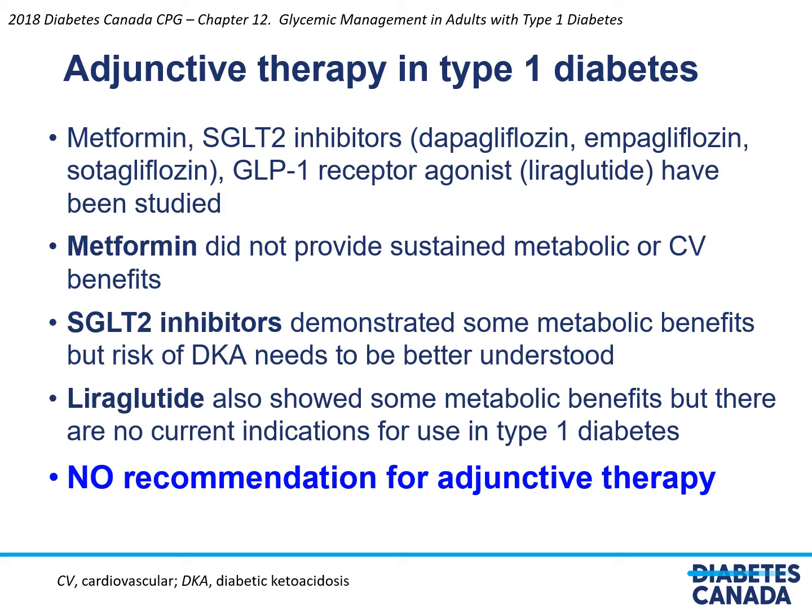Adjunctive therapies in type 1 diabetes: Metformin, several SGLT2 inhibitors, and the GLP-1 receptor agonist liraglutide have been studied. Metformin did not provide sustained metabolic or cardiovascular benefits. SGLT2 inhibitors demonstrated some metabolic benefits but at a high risk of DKA. Liraglutide also showed some metabolic benefits, but there are currently no indications for use in type 1 diabetes. Therefore, there are no recommendations for adjunctive therapy in type 1 diabetes, and use of any of these agents must be individualized.